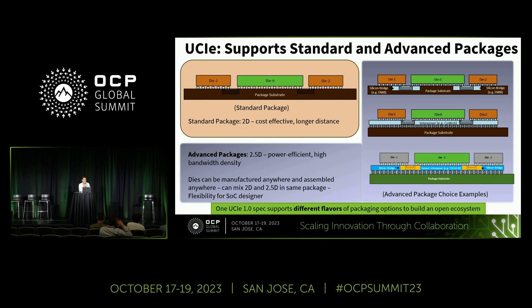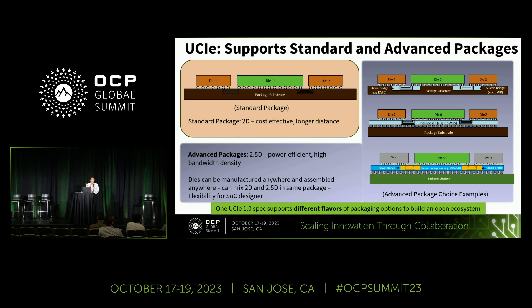We support two types of packages: standard and advanced packaging. Standard is 2D — cost-effective, longer distance, about 25 millimeters. Advanced packaging is 2.5D. The picture on the right-hand side shows three examples: the topmost is Intel's EMIB, the middle is TSMC's CoWoS, and the bottom is ASE's FOCoS. The vision is that dies can be manufactured anywhere, assembled by anybody, and it should just work — just like today you can get cards from any vendor, design your board anywhere, plug them into PCI Express, and it works. That's what we do with UCIE.